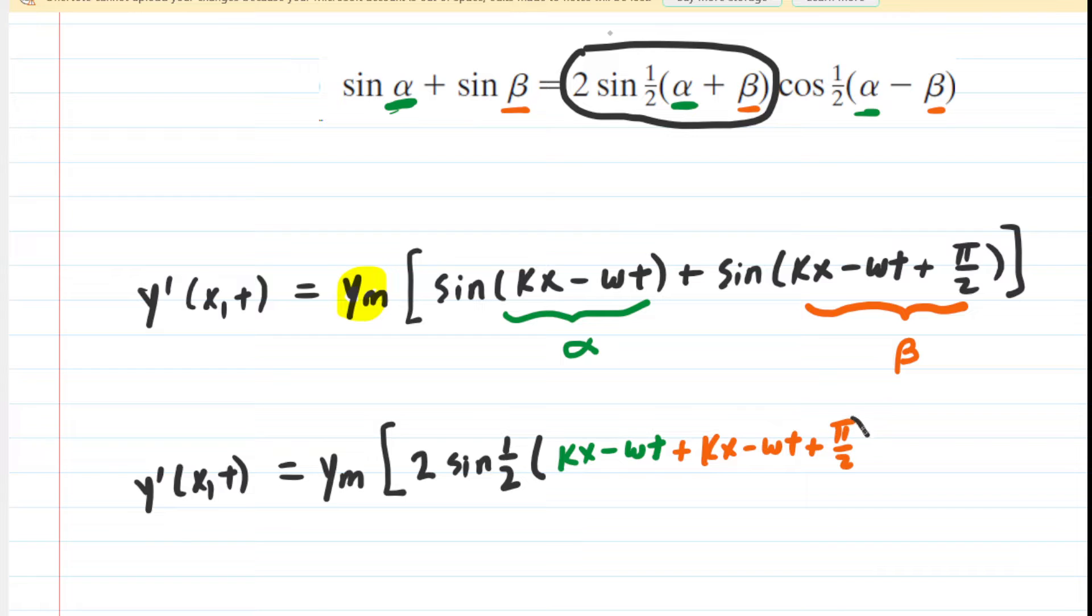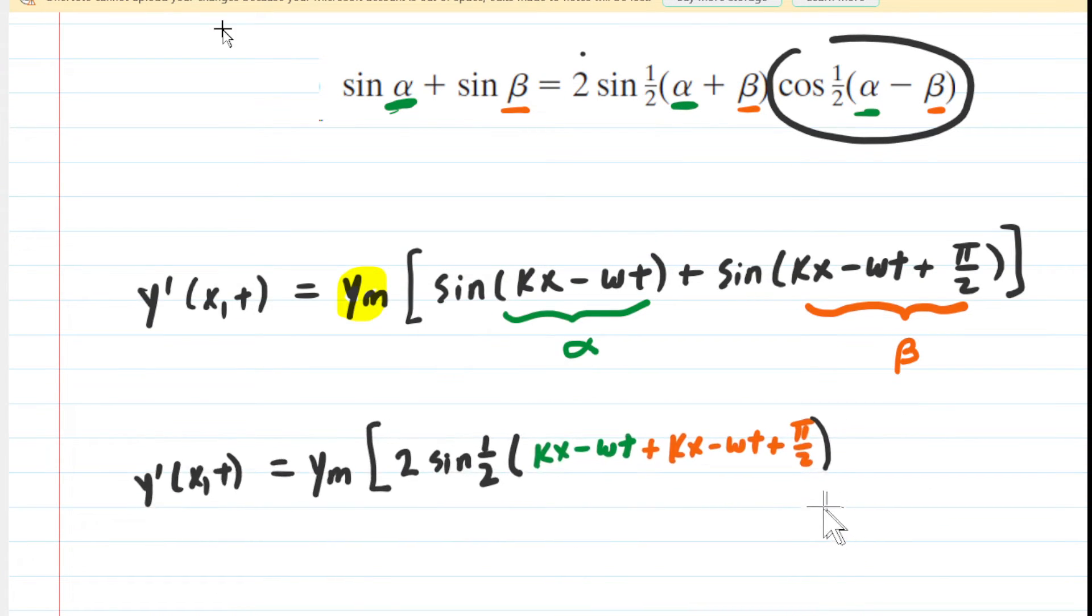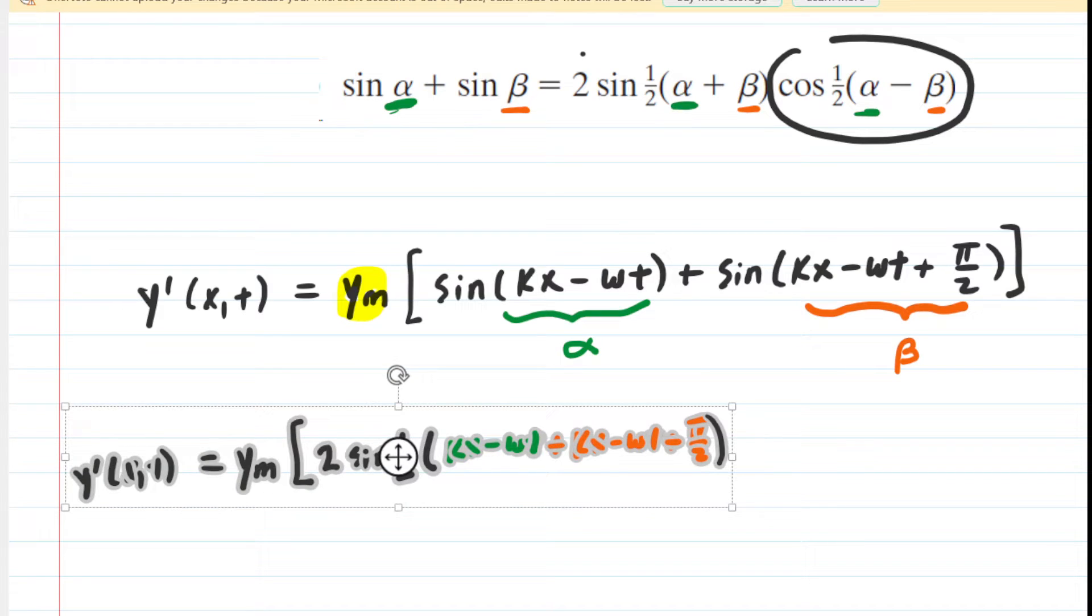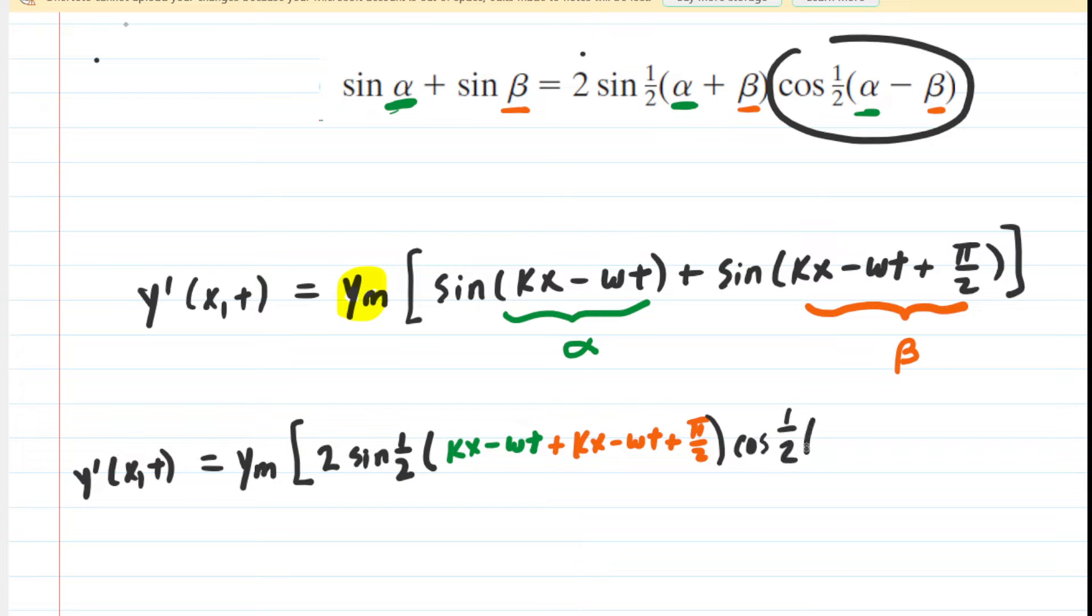Then we look on in the identity and we have to multiply by the cosine of 1/2 of the difference between α and β. This is going to get rather lengthy. Let's shrink that down. We're going to have to multiply that by the cosine of 1/2, and now we're going to do the difference.